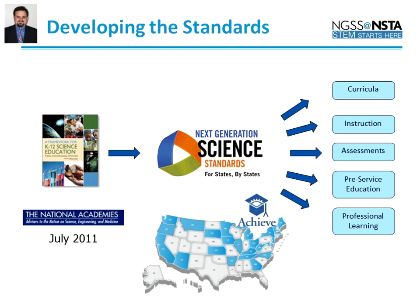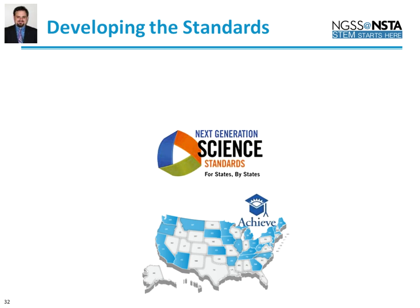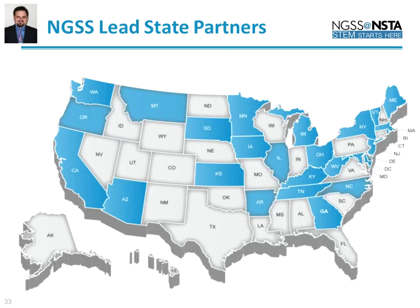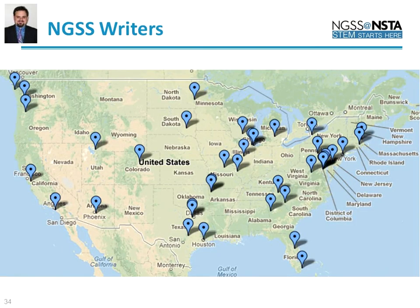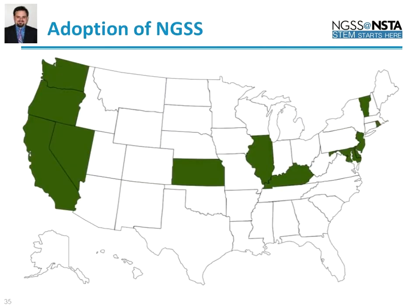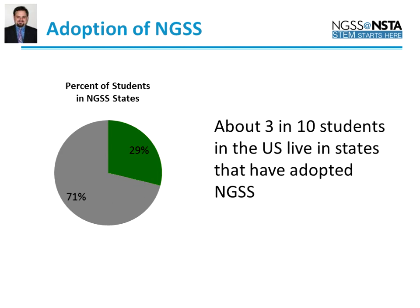That's the general structure outlined within the framework. The standards themselves were developed by a coalition of 26 different states in a process organized by Achieve, with a group of 41 writers stretched across the United States. At this point, NGSS has been adopted in 13 different states — about 3 in 10 students now live in a state where NGSS has been adopted — and that number continues to grow.